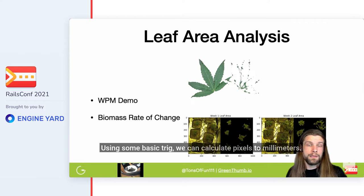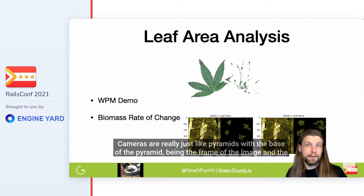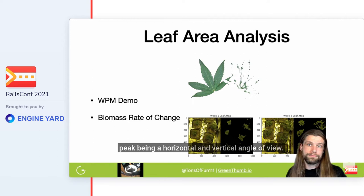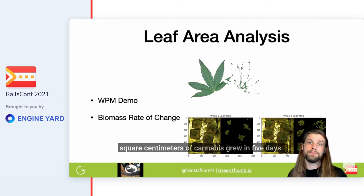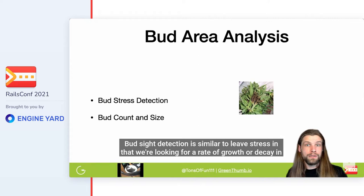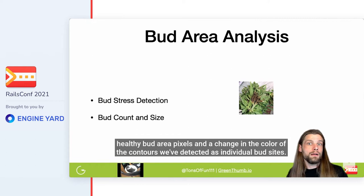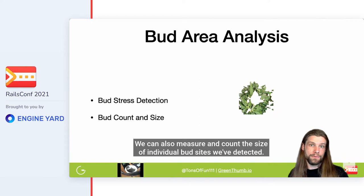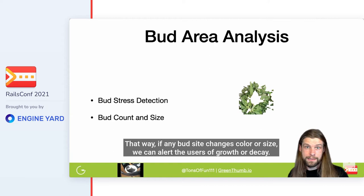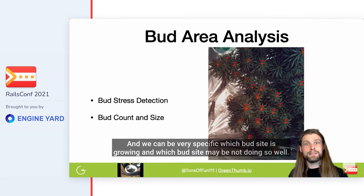Using some basic trigonometry, we can calculate pixels to millimeters. Cameras are really just like pyramids, with the base of the pyramid being the frame of the image and the peak being a horizontal and vertical angle of view. Based on camera specs and distance to the canopy, we can calculate that approximately 27 square centimeters of cannabis grew in five days. Bud site detection is similar — we're looking for a rate of growth or decay in healthy bud area pixels and a change in the color of detected contours. We can measure and count the size of individual bud sites so that if any bud site changes color or size, we can alert users of growth or decay.